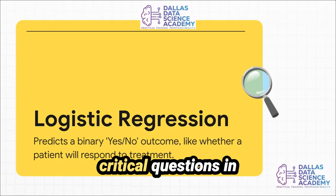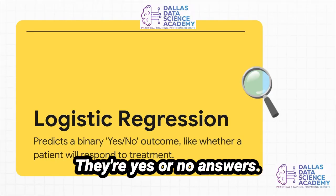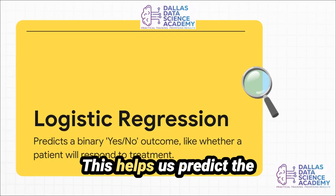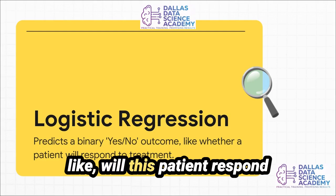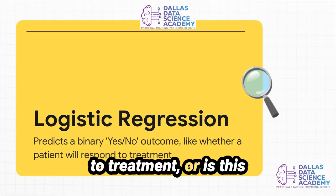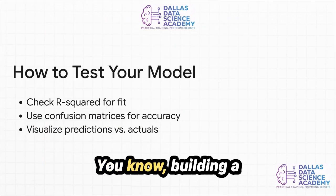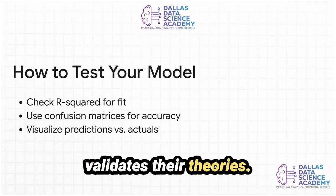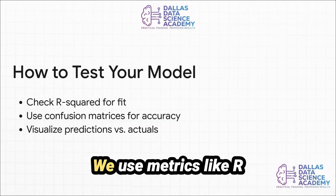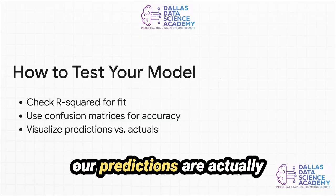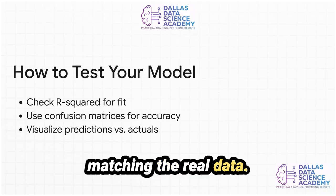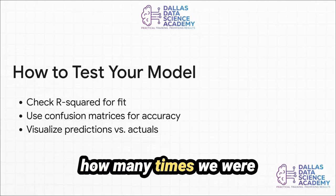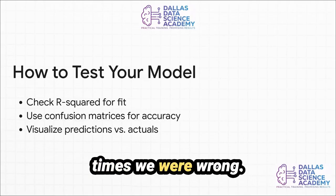So many critical questions in medicine aren't numbers — they're yes-or-no answers. For those, we use logistic regression, which helps us predict the probability of an outcome, like whether a patient will respond to treatment, or whether a tumor is malignant or benign. Building a model is one thing, but a good detective always validates their theories. We use metrics like R-squared to see how well our predictions match real data. For yes-or-no predictions, a confusion matrix shows exactly how many times we were right — and maybe more importantly, how many times we were wrong. Visualizing predictions against reality is always the final check.